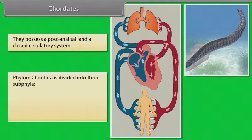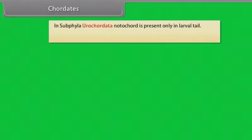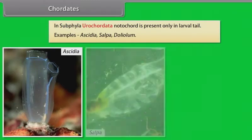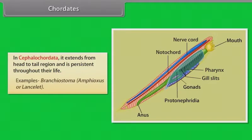Phylum Chordata is divided into three sub-phyla: Urochordata, Cephalochordata and Vertebrata. In sub-phylum Urochordata, notochord is present only in the larval tail. Examples: Ascidia, Salpa, Doliolum. In Cephalochordata, it extends from head to tail region and is persistent throughout life. Examples: Branchiostoma, Amphioxus and Lancelet.